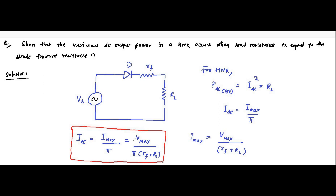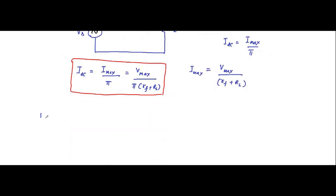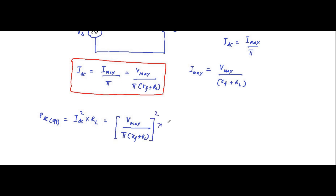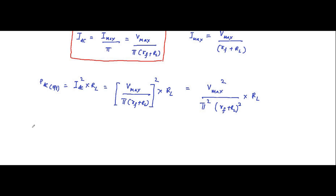The DC output power is equal to IDC squared into RL, that is equal to [V_max / (pi × (RF + RL))]² into RL, which simplifies to V_max² × RL / [pi × (RF + RL)]². Here RL is the variable and this is the dependent parameter.